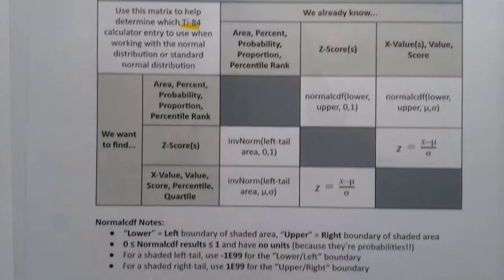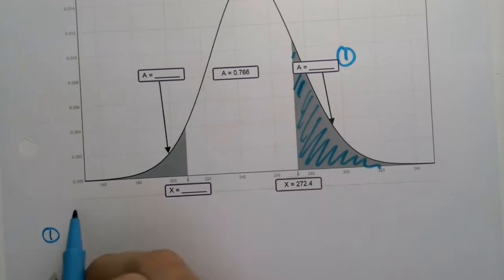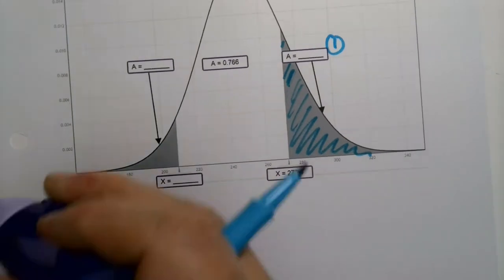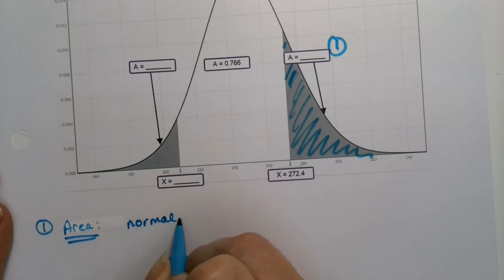And remember, if you shade the right tail, which we do have shaded, you'll be using 1E99 for that upper boundary. So that zone will be normal. Actually, let me label it area. Because that's what we're finding. So if I normal CDF,